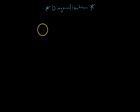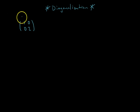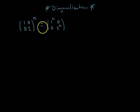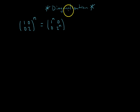First things first: what is a diagonal matrix? Here's an example: [1, 0; 0, 2]. This is a diagonal matrix because it has non-zero entries along the main diagonal and zeros everywhere else. An interesting property of diagonal matrices is if you raise one to the nth power, it equals the matrix where the entries on the main diagonal get raised to the nth power. That's really convenient.